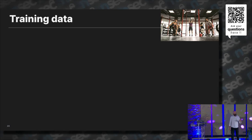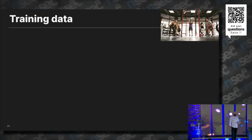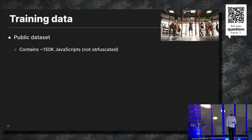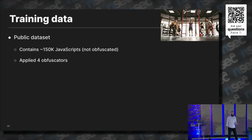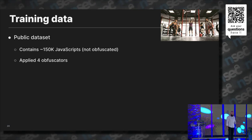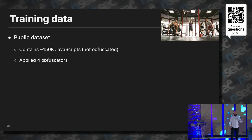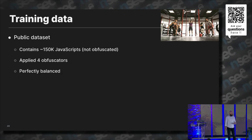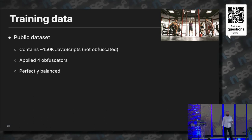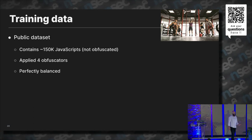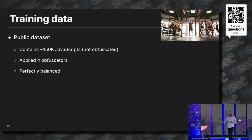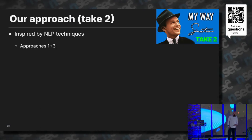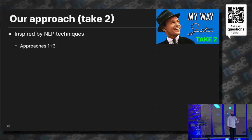Before describing the approach that really worked, a few words about our training data. We used a public dataset of about 150,000 JavaScripts — all clear text. We applied four different obfuscators to them, keeping four to test the model on three additional obfuscators it had not previously seen. We ended up with a perfectly balanced dataset of about 100,000 clear text JavaScripts and 100,000 obfuscated JavaScripts, equally divided between obfuscators.